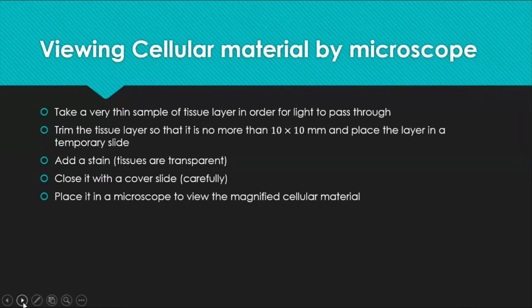Cells are very small in size, so microscopes play a very important role in cell discovery. To view a cellular material in a light microscope: take a very thin layer of the sample — light should be able to pass through the tissue so that the magnified image can be seen. Trim the layer to 10mm × 10mm, place it on a temporary slide, add a stain to make the cell visible, and cover it with a cover slide carefully without damaging the specimen. Then place it in a microscope and your slide is ready to view.